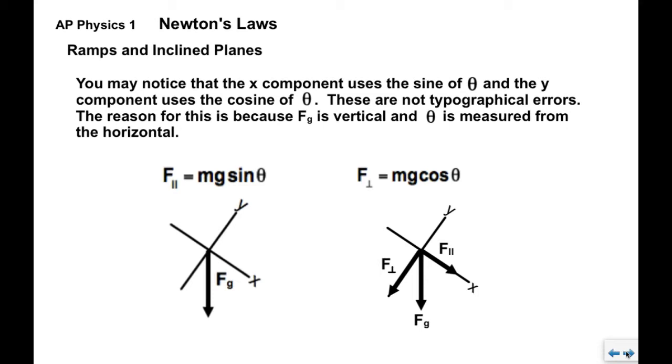You may notice that the x-component uses the sine of theta and the y-component uses the cosine. These are not typos, they're not errors. The reason is FG is vertical and theta is measured from the horizontal. So that flips the angle around, changes the designation in terms of using theta. If you want a more detailed picture I can put one up on the board for you.